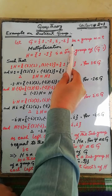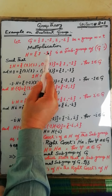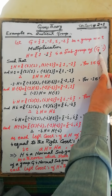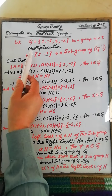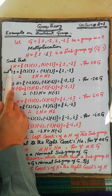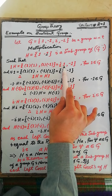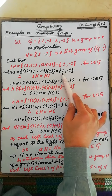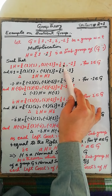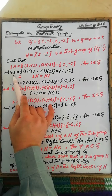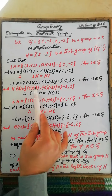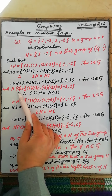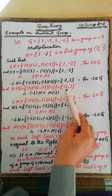Let G be a group with respect to the binary operation multiplication. H, which contains the elements 1 and -1, is a subgroup of G. The left coset determined by element 1 in G is the set {1, -1}, and the right coset determined by element 1 is also the set {1, -1}. These two sets are the same. Similarly, the left coset determined by element -1 contains elements -1 and 1, and the right coset determined by -1 is also the set containing -1 and 1.